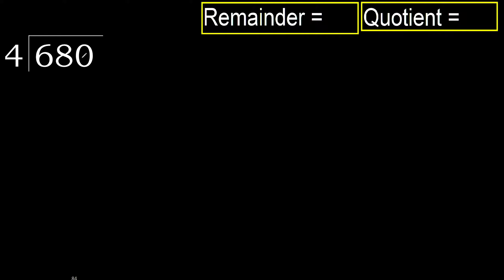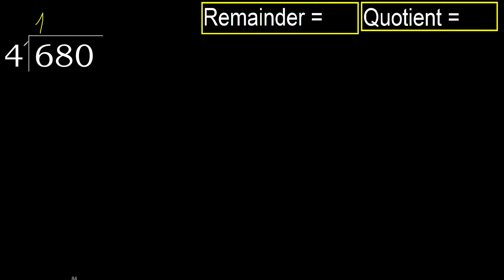680 divided by 4. 6 is not less, therefore with 6. 4 multiplied by which number is nearest 6 but not greater? 4 multiplied by 2 is 8 — 8 is greater. Multiplied by 1 is 4, which is not greater. 6 minus 4 is 2. Next.